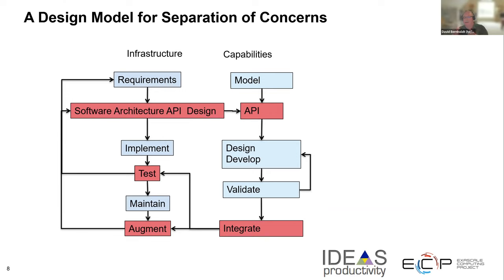As you progress with the science on the right side, you modify the model and code to the infrastructure API. You do design work and development on the science side, validate and integrate, and test. Along the way, you may find you need changes in the infrastructure — at which point you augment it, modify the API, implement the changes, and test them carefully. You do this in a very thoughtful, controlled way, so you're not changing the infrastructure unnecessarily, while science capabilities are free to change more often.